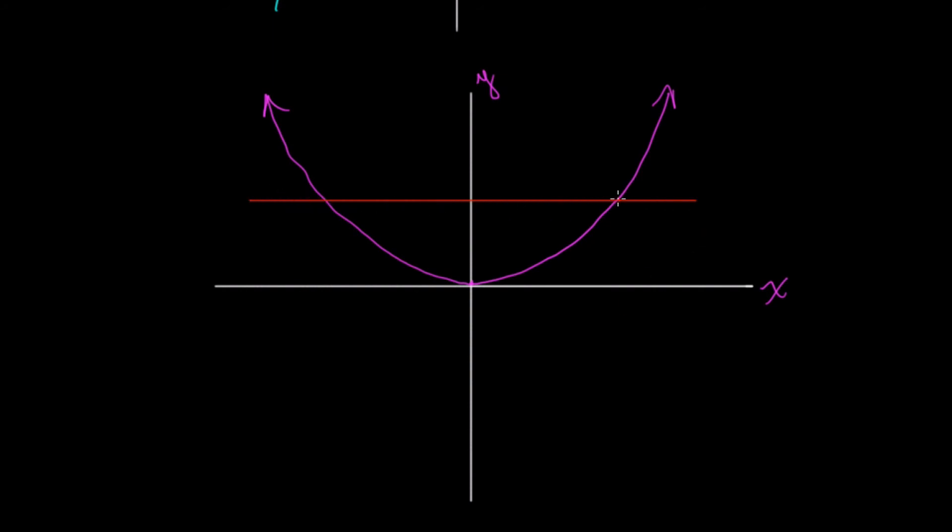Just to reinforce this, let's look at the graph of y equals x squared. Here's x, here's y. If we draw a random horizontal line, we can see that it intersects the graph twice. So it fails the horizontal line test.